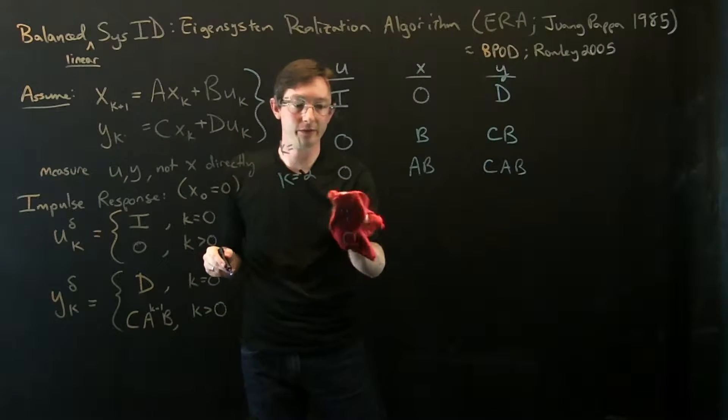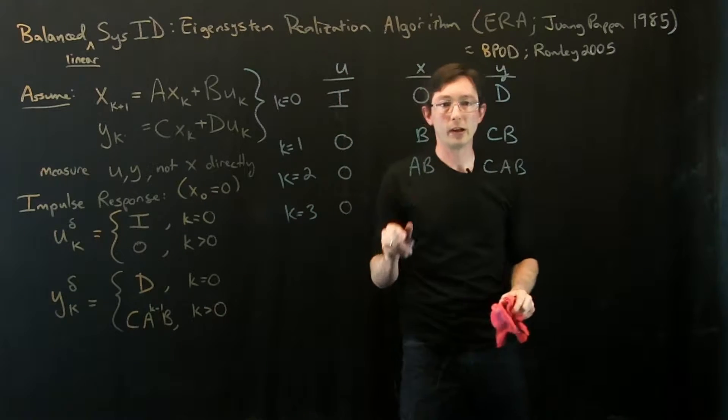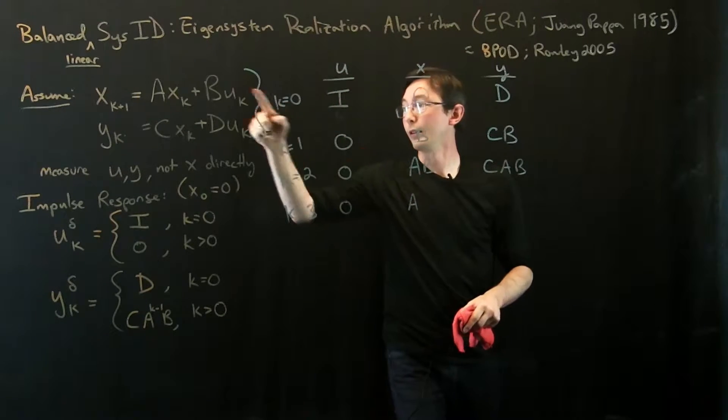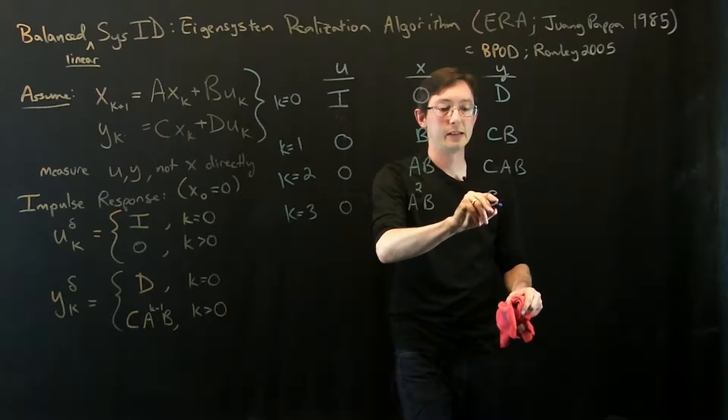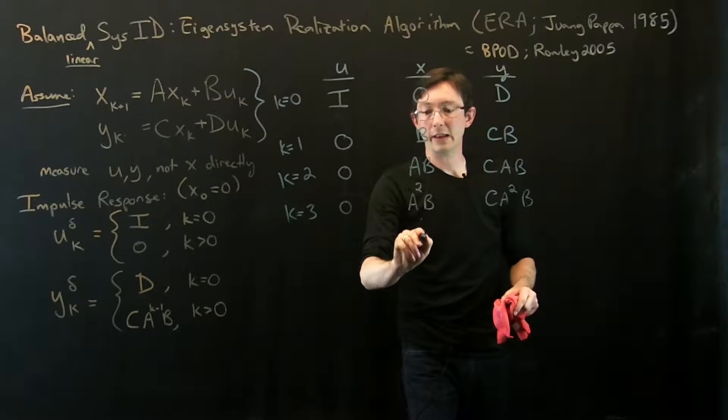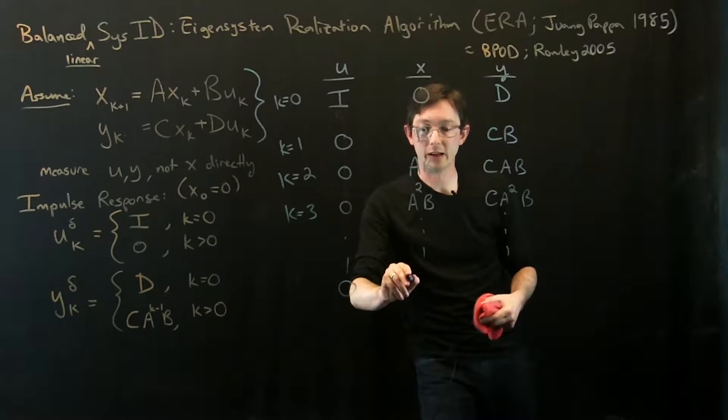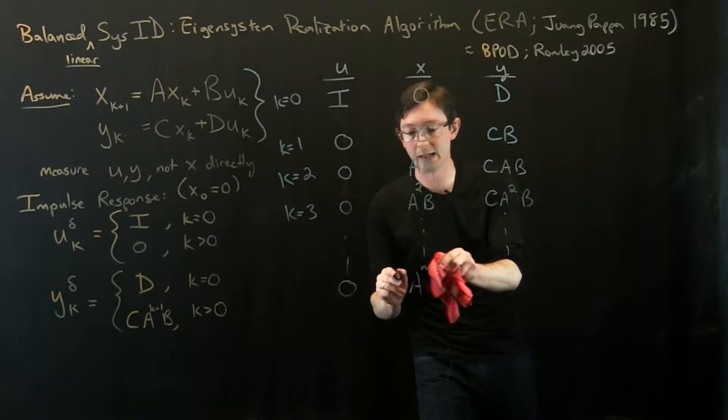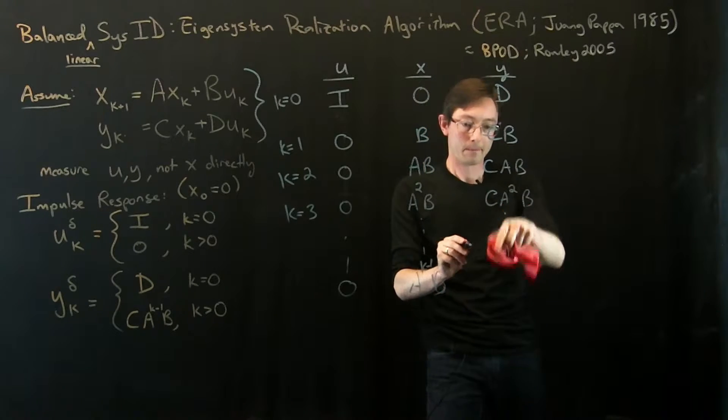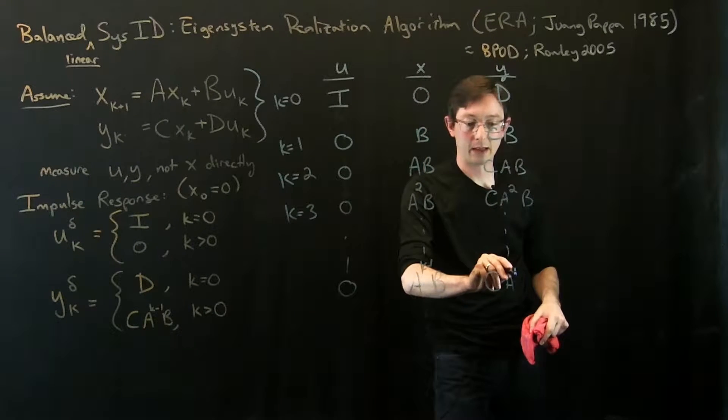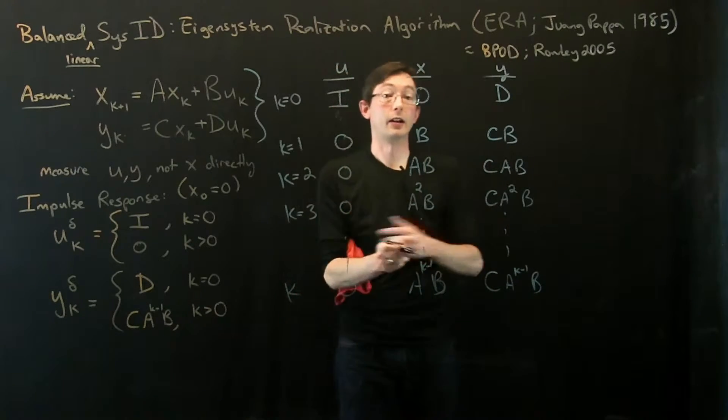Maybe I will give myself the room and actually do k equals 3, just for grins. So now my state is AB. I multiply it by another A. I get an A squared B, and I measure it: C A squared B, and so on and so forth. And you can very clearly see the pattern here. I get A to the k minus 1 B, C A to the k minus 1 B for a generic k.